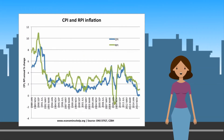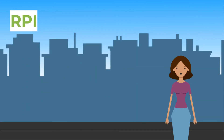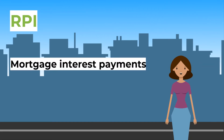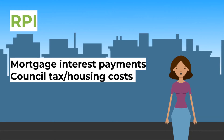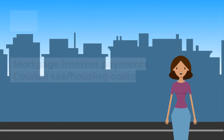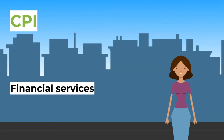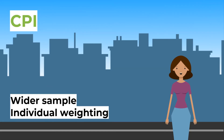Looking at the graph, the CPI and RPI generally track each other, but there are some subtle differences. The CPI is based on the HCIP — Harmonized Consumer Index of Prices — which measures inflation on internationally agreed standards throughout Europe. The RPI includes mortgage interest payments, so changes in interest rates affect the RPI; if interest rates are cut, the RPI will fall but not the CPI. The RPI also includes council tax and some other housing costs not included in the CPI. The CPI includes some financial services not included in the RPI, and is based on a wider sample of the population for working out the individual weighting of different types of goods.